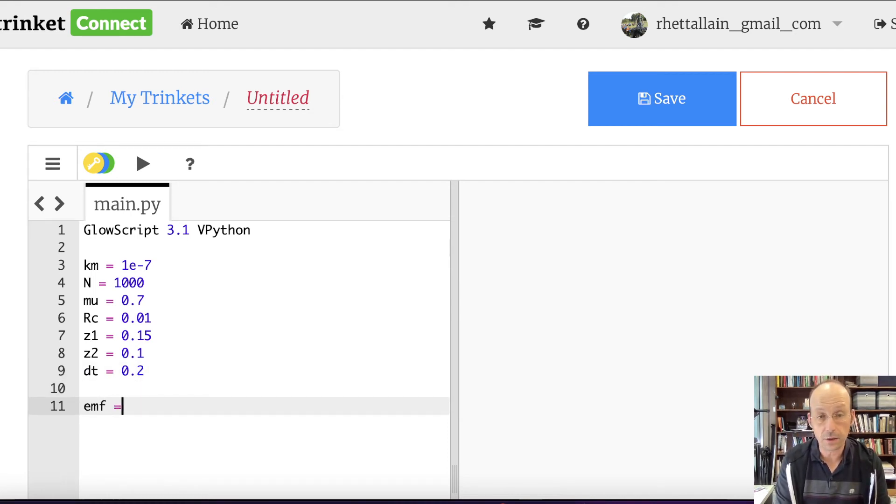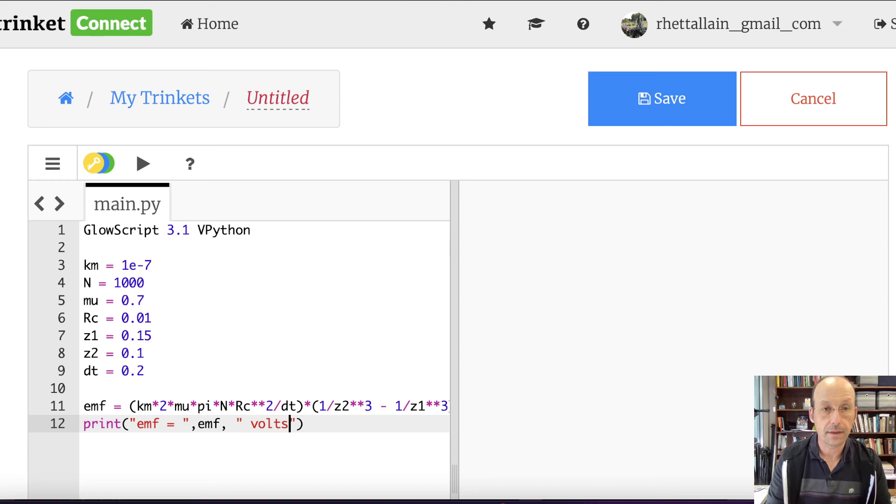Okay, so now I can say EMF equals. I'm just going to type in the equation. Km times 2 times mu times pi times rc squared times n. I'm going to put the n on this side because I get scared. All of that, all of that, let's see, divided by dt. And then all of that, I'll put a parenthesis right here, times 1 divided by z2 cubed minus 1 divided by z1 cubed. And then I'm going to say print EMF equals EMF volts. And I'm going to run it.